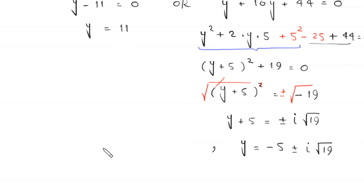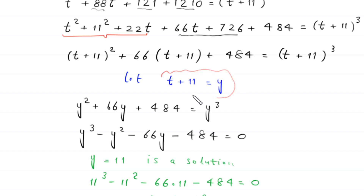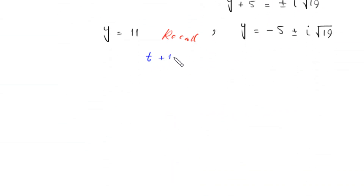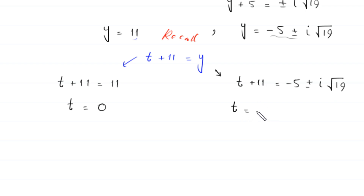We recall that y equals t plus 11. So when y equals 11, we get t plus 11 equals 11, giving t equals 0. When y equals negative 5 plus or minus i root 19, we get t plus 11 equals negative 5 plus or minus i root 19, so t equals negative 16 plus or minus i times root 19.